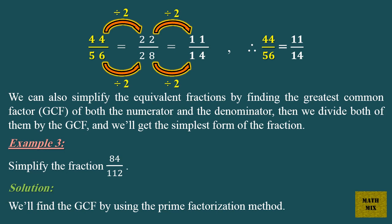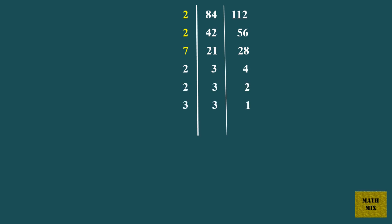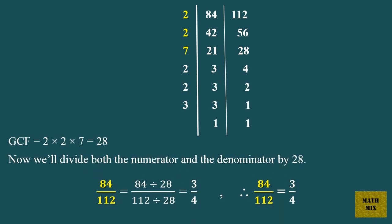Example 3: Simplify the fraction 84 over 112. Solution: We'll find the GCF by using the prime factorization method. GCF equals 2 times 2 times 7, which equals 28. Now we'll divide both the numerator and the denominator by 28. 84 over 112 equals 84 divided by 28 over 112 divided by 28, which equals 3 over 4. Therefore 84 over 112 equals 3 over 4.